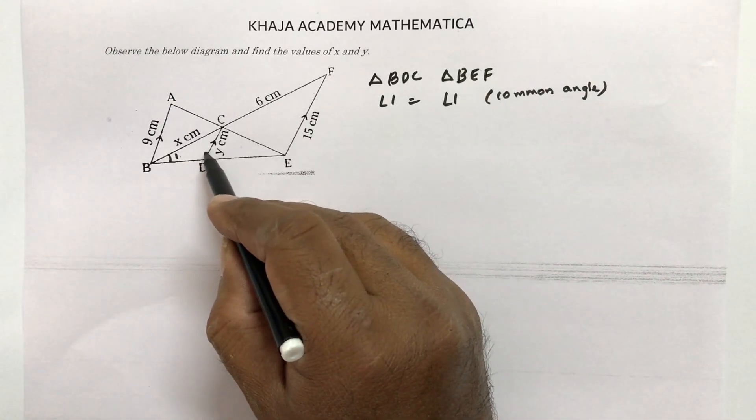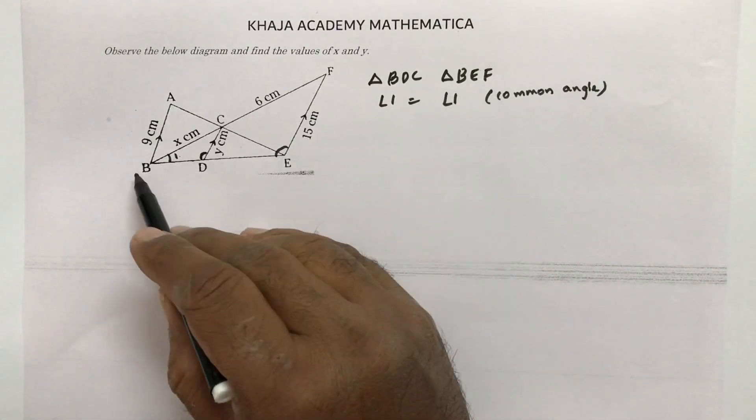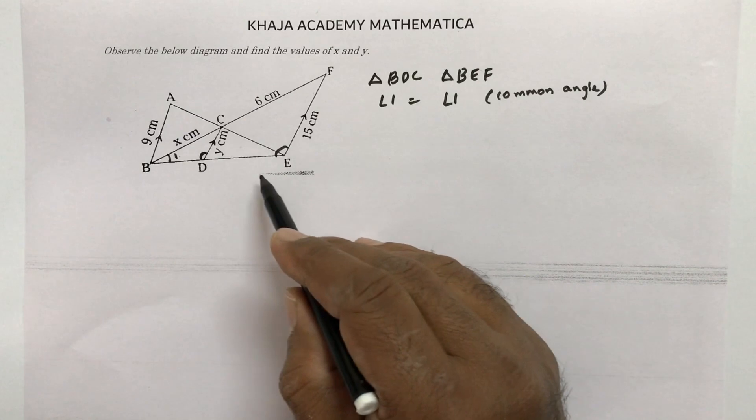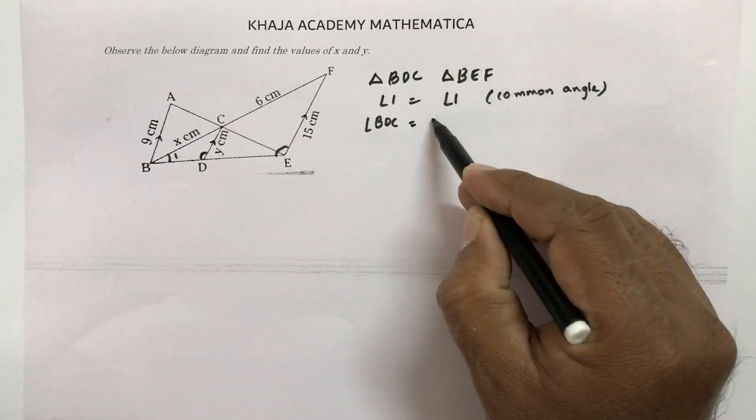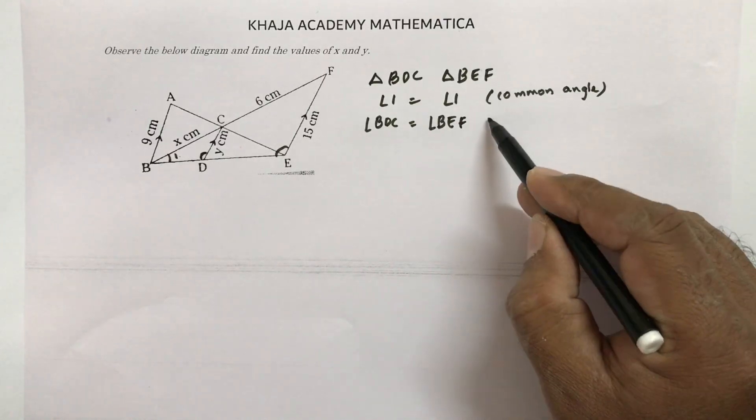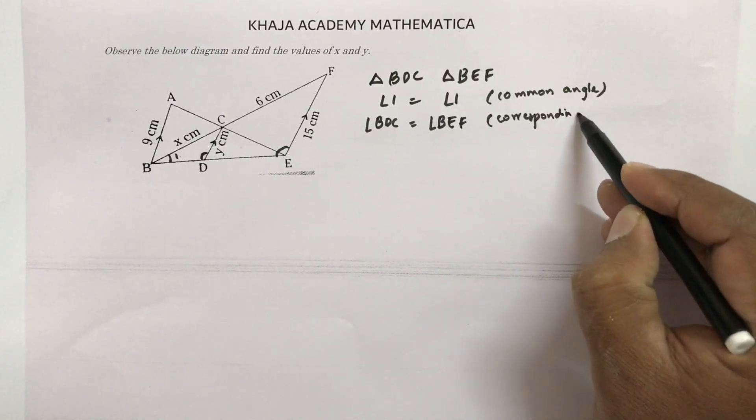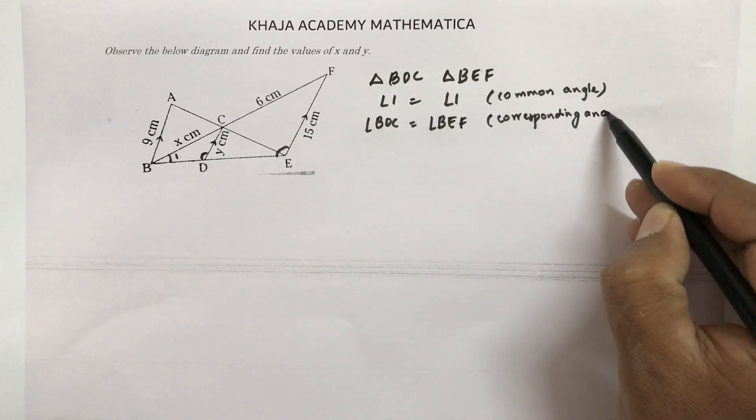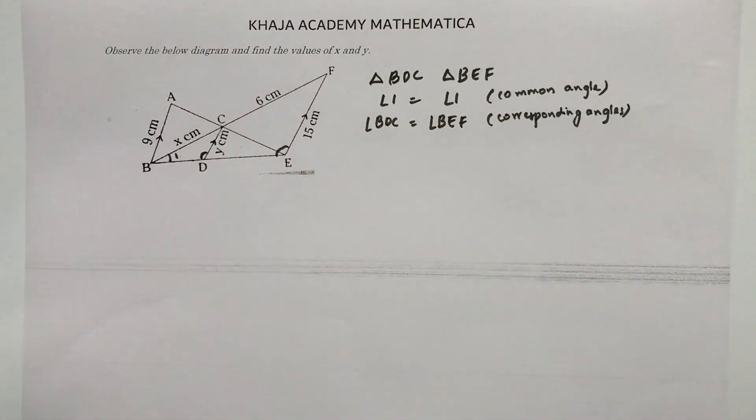Next, here if you observe these angles, these lines are parallel, so these two angles will be like corresponding. Angle BDC equals angle BEF. These angles are corresponding angles because these lines are parallel.